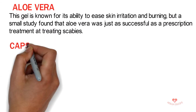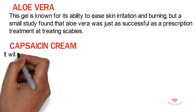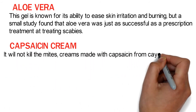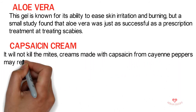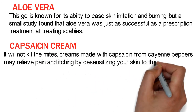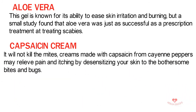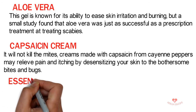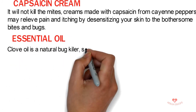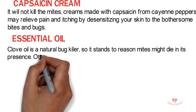3. Capsaicin cream — it will not kill the mites, but creams made with capsaicin from cayenne peppers may relieve pain and itching by desensitizing your skin to the bothersome bites and bugs. 4. Essential oils — clove oil is a natural bug killer, so it stands to reason mites might die in its presence.